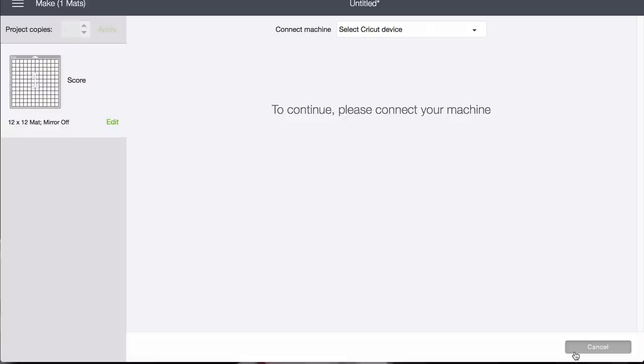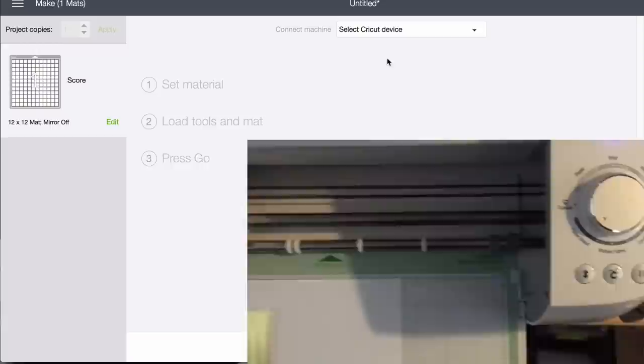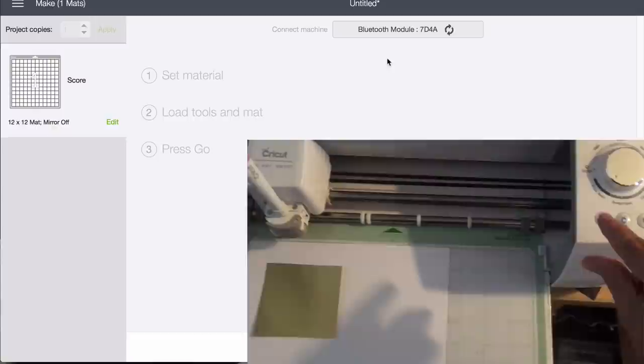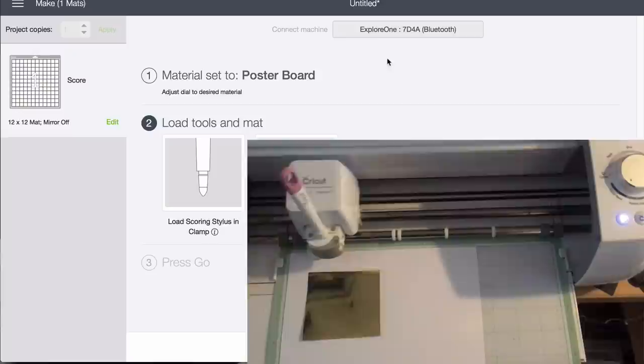Install the scoring stylus and set the dial to poster paper or a similar setting on the maker. At the prompt, load the mat and press the go button on your machine.